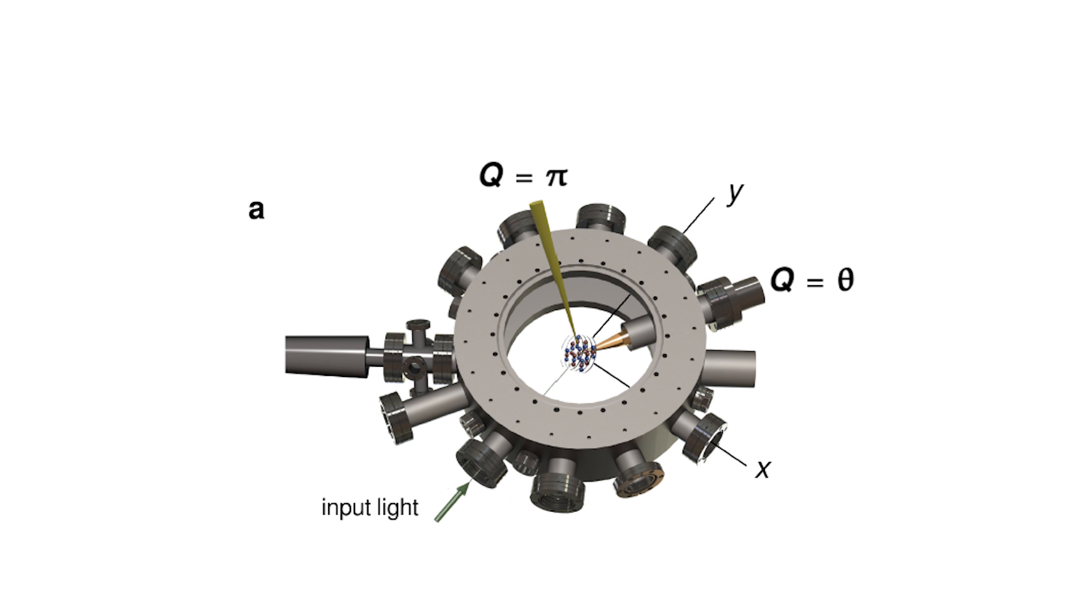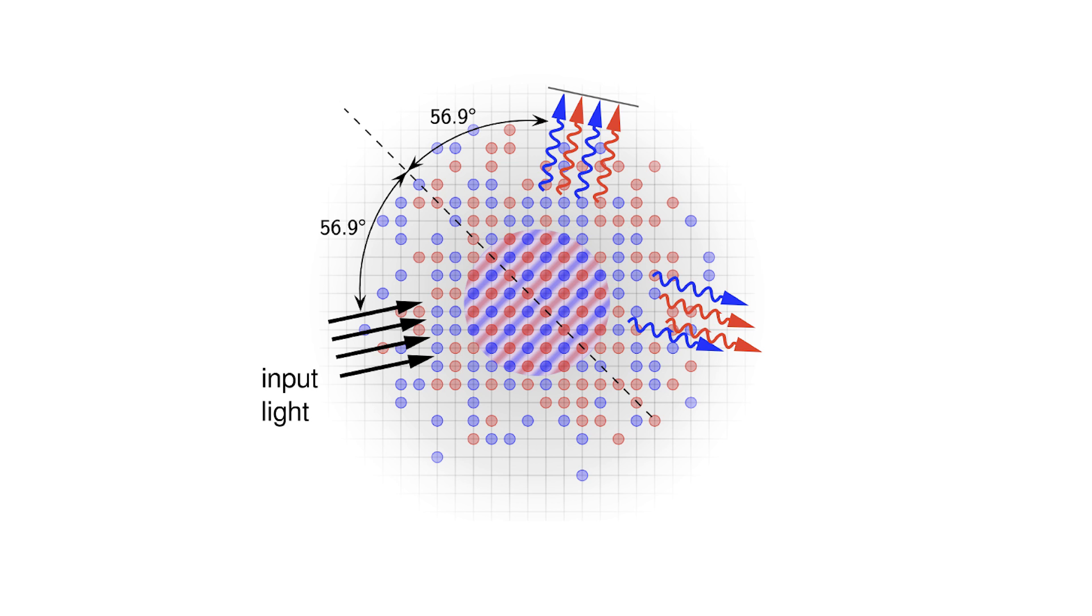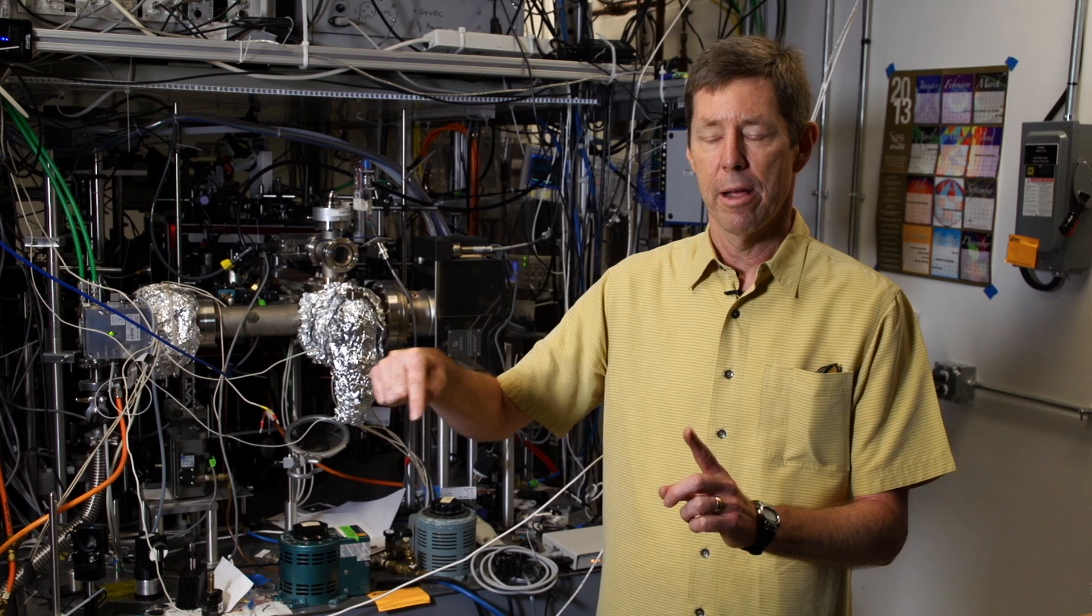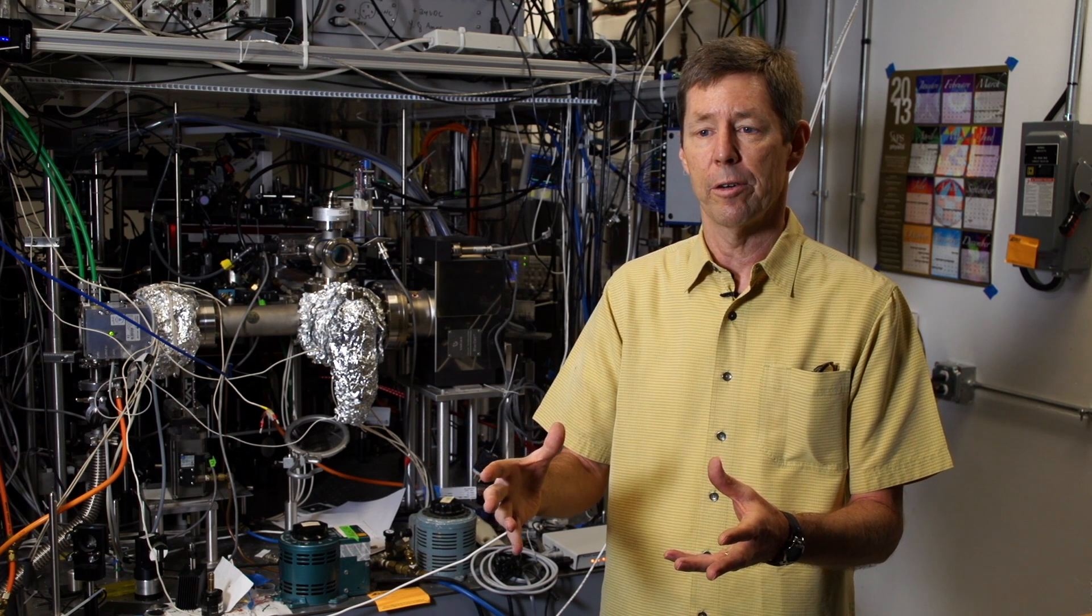Our most recent experiment was to observe antiferromagnetism. Antiferromagnetism means that we have the spins of the atoms pointed in alternating directions like a checkerboard—up, down, up, down—in a completely three-dimensional crystal.